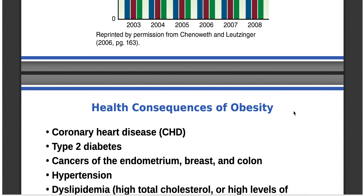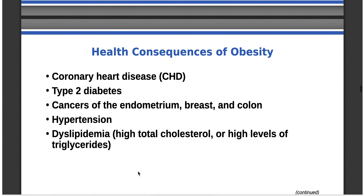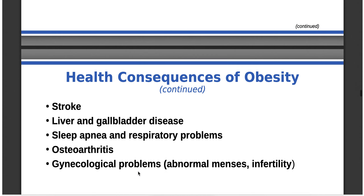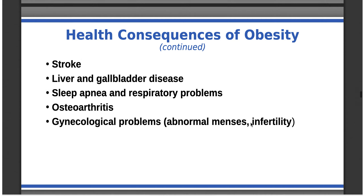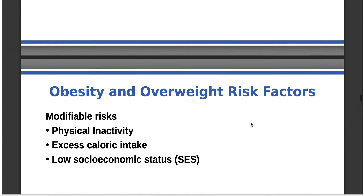We sometimes forget about the actual health concerns and think weight itself is the main problem, but it's really the health consequences of obesity and overweight that matter: coronary heart disease, type 2 diabetes, certain cancers, hypertension, dyslipidemia, liver and gallbladder disease, stroke, sleep and respiratory problems, osteoarthritis, and even gynecological problems like abnormal menstrual cycles and infertility — which can also significantly impact mental health.